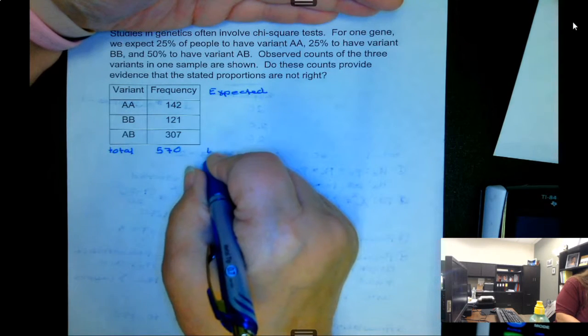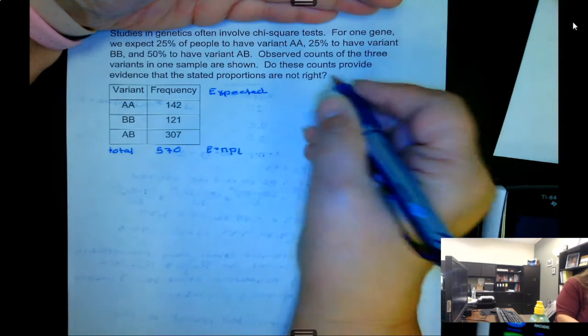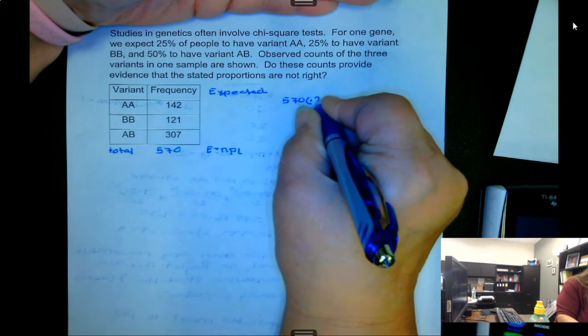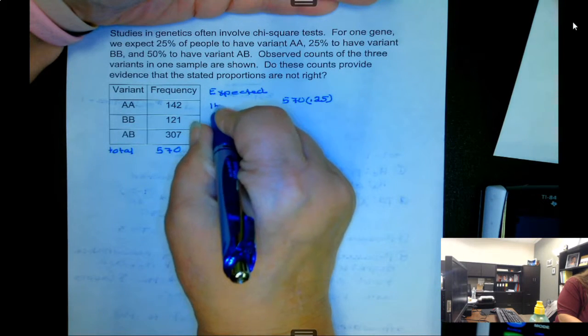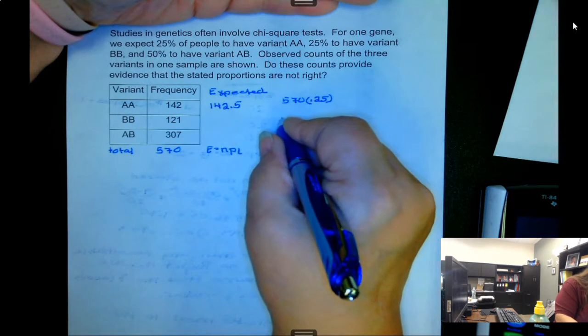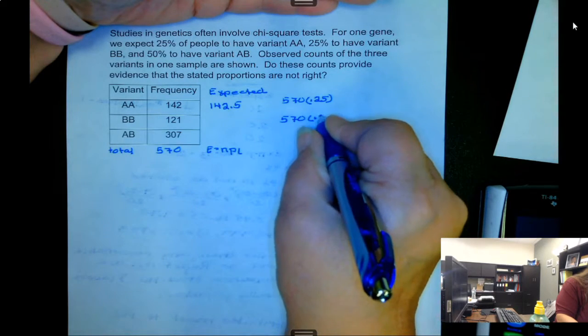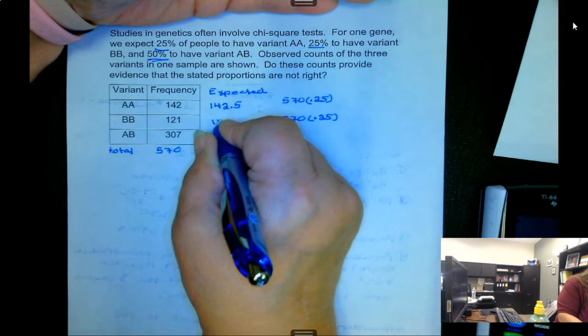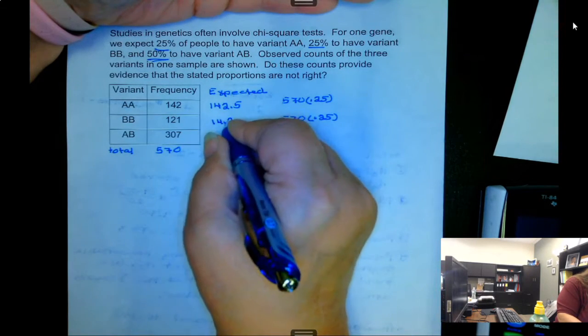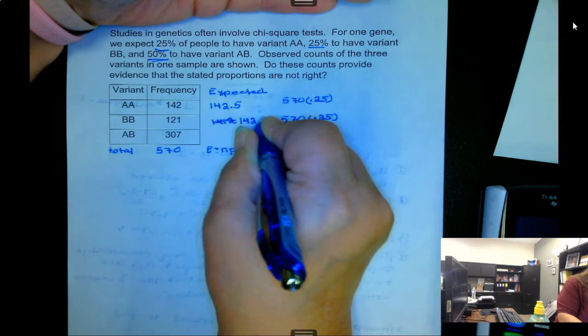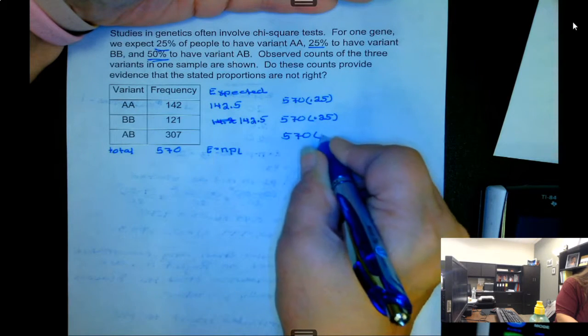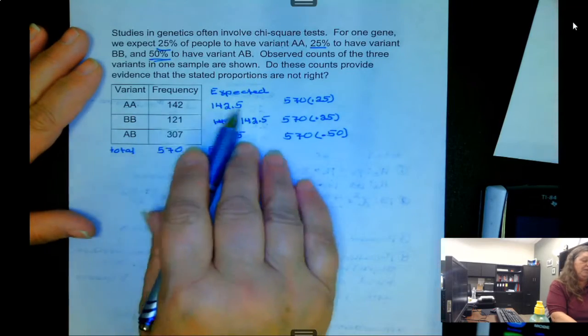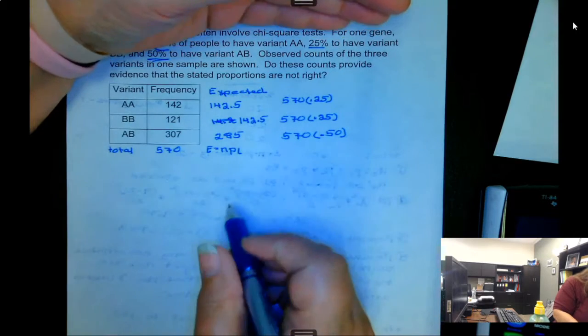The expected value is n times p sub i. So in the first case it's 570 times 0.25, which gives us 142.5. The second case it's 570 times 0.25 because those are the probabilities or the percentages we were given, which is also 142.5. And in the third case it's 570 times 0.50, which is 285. We see the first one is pretty close, the other two they're a little far away, so let's see how this affects the chi-square.